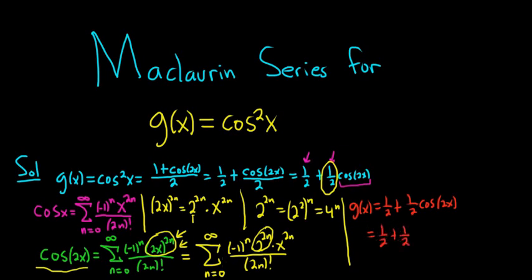And then we have 1 half times all of this. This is our cosine 2x right here, this whole piece here. So we're just going to multiply it by 1 half.